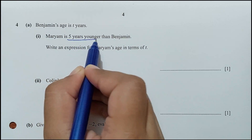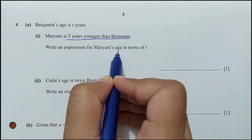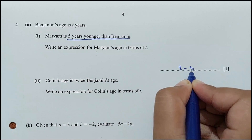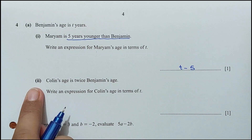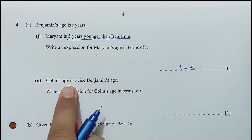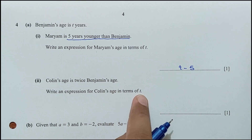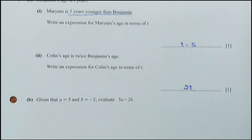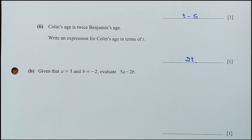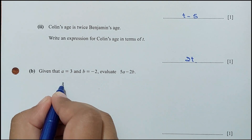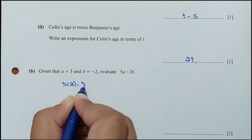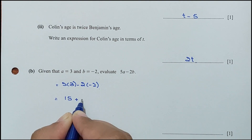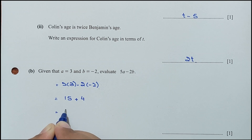Question 4 part A: Benjamin's age is t years. Mariam is 5 years younger than Benjamin, so Mariam's age is t − 5. Colin's age is twice Benjamin's age, so Colin's age is 2t. For part B: given a = 3 and b = −2, evaluate 5a − 2b. That's 5 × 3 minus 2 × (−2) = 15 + 4 = 19.